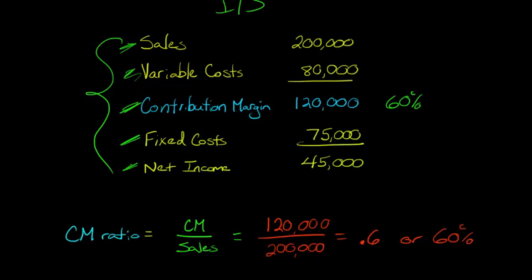60%. And what that means is that this 0.6, or I'll just add a 0 to it, it's the same number either way, 0.60, this is saying that $0.60 of every dollar in sales, so every time we have $1 in sales, we have $0.60 in contribution margin.